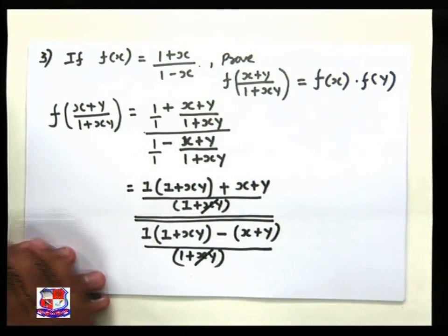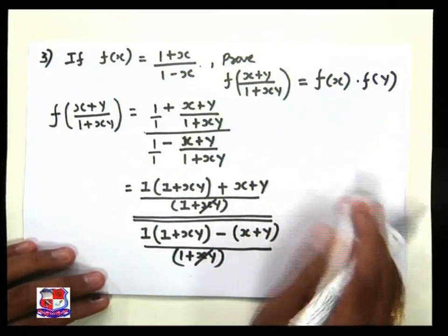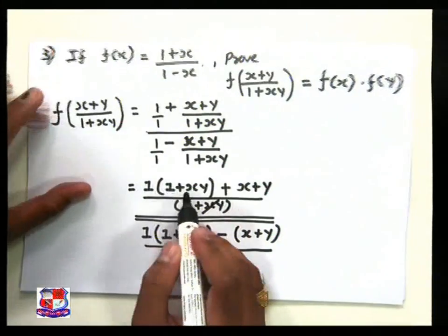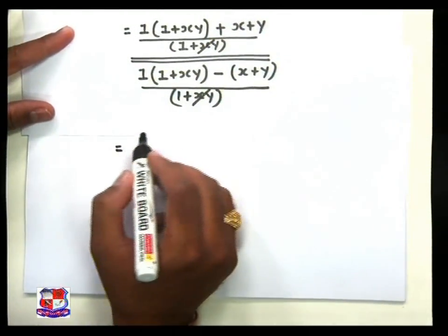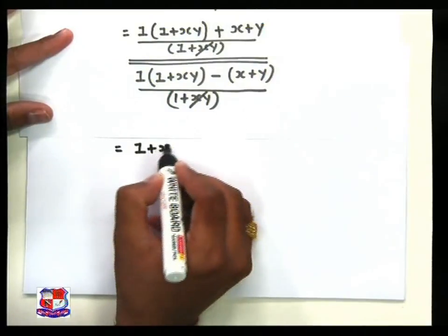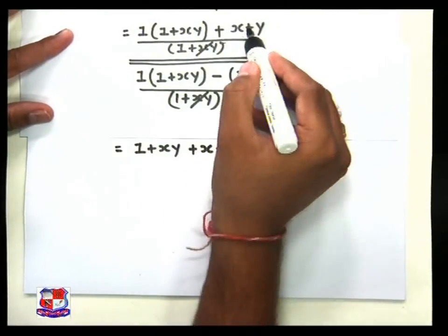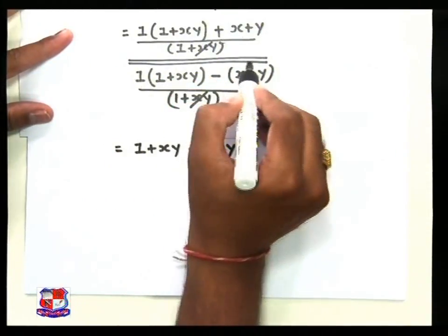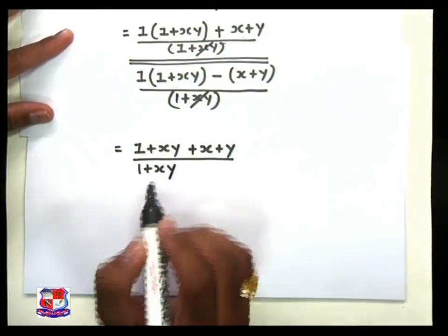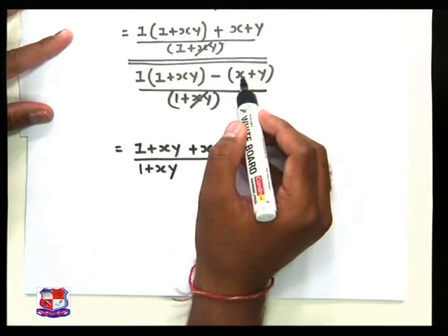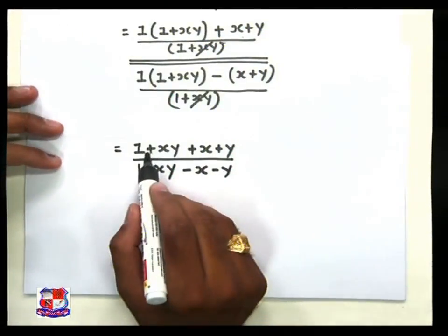Now simplify this step: (1 + xy) in the numerator and (1 + xy) in the denominator. We can easily identify the numerator and denominator terms. The result 1 multiplied into (1 + xy) gives (1 + xy). So the numerator becomes: 1 plus xy, plus x plus y. The denominator has 1 plus xy, minus x, minus y.